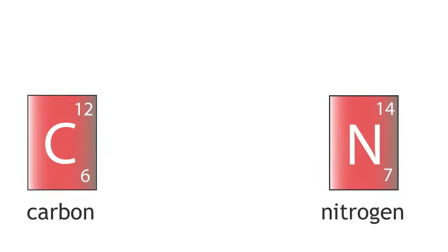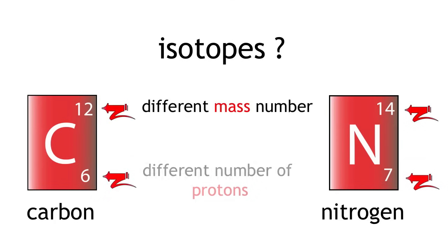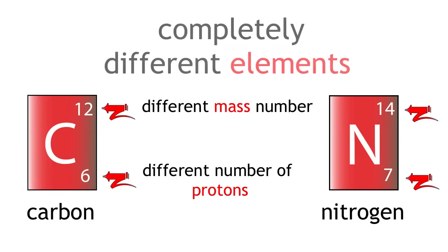If we look at carbon and nitrogen, are they isotopes? They have different mass numbers but they also have a different number of protons. Therefore, they are not isotopes. They are completely different elements.